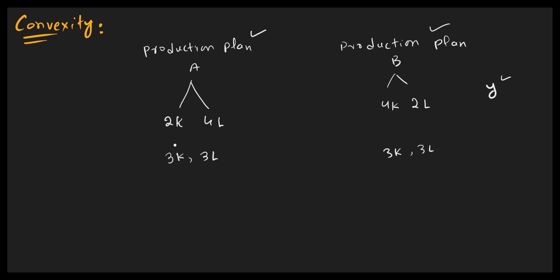If these types of substitutions are possible in a technology, then the technology is said to be convex. If this is not possible, then the technology is not convex. This is the background story behind convexity.